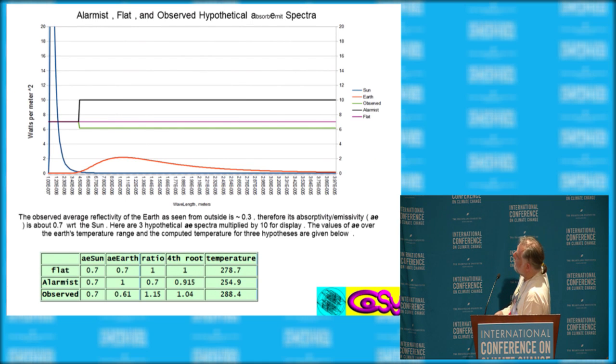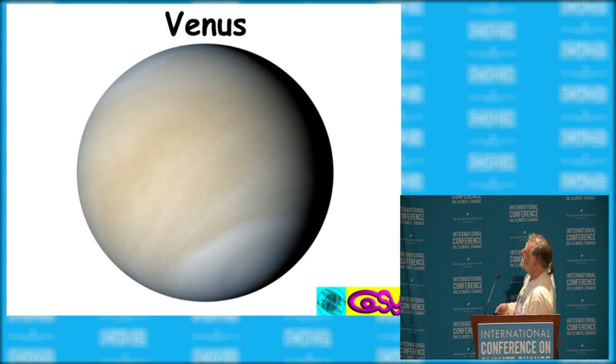Here are the three hypotheses of a flat spectrum that makes no change. 278 is the gray value temperature. The alarmists have this step function here. The earth absorbs about 0.7 and they say it radiates as a black body. And that's where you get this 255 C approximation. The green curve actually matches about the cover, the color of the earth.